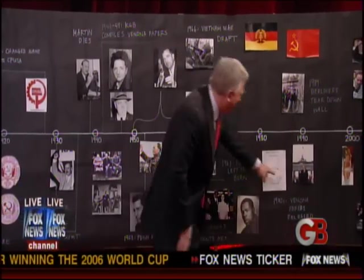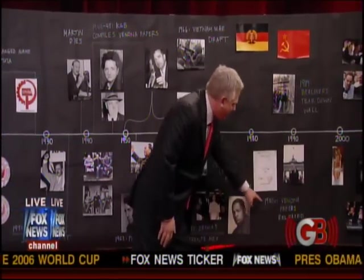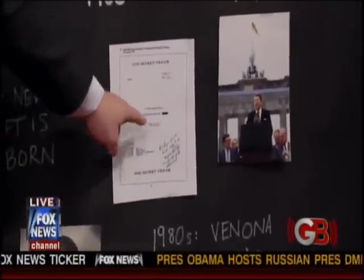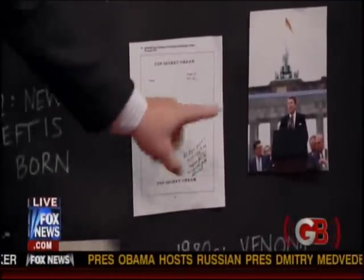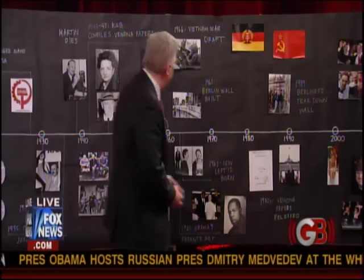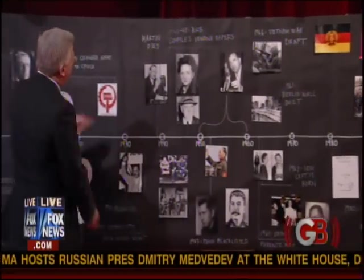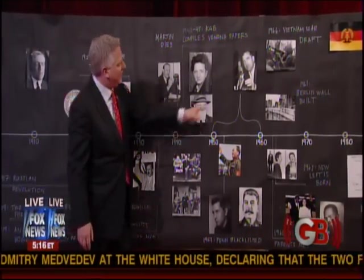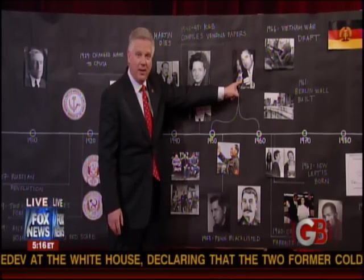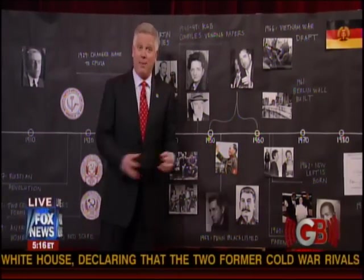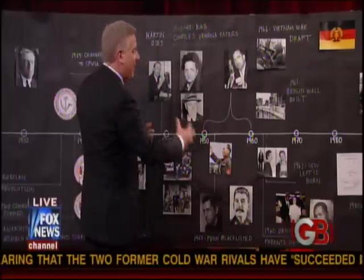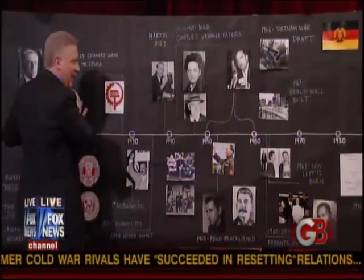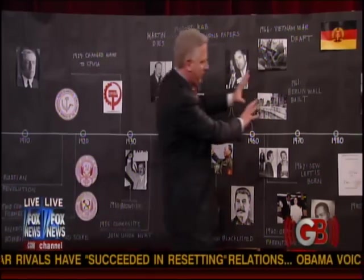We have the Venona Papers, which were released in 1995. What did these papers say? Well, remember the KGB was compiling here. They say that basically everything this man said was right — they were happening. There were communists everywhere, and they infected absolutely everything.